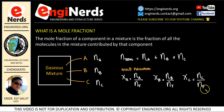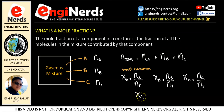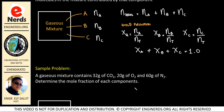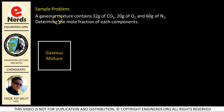Ganito lang kadali ang pagkuha ng mole fraction. We need to remember that the sum of all the mole fractions should be equal to 1 because these are all a fraction of our gaseous mixture. So XA plus XB plus XC should be equal to 1. Now let us apply that on this problem: a gaseous mixture contains 32 grams of CO2, 20 grams of O2, and 60 grams of N2. Determine the mole fraction of each component.